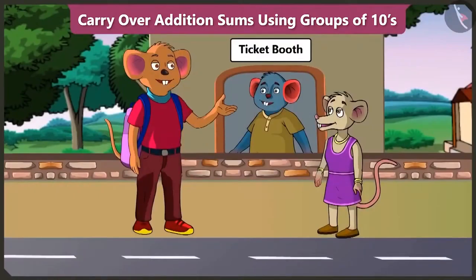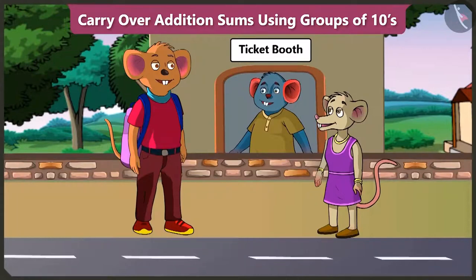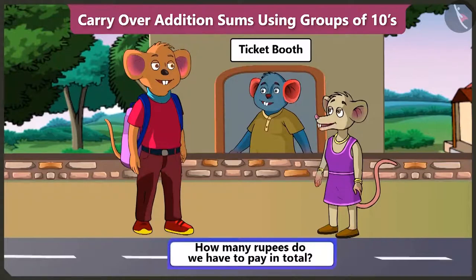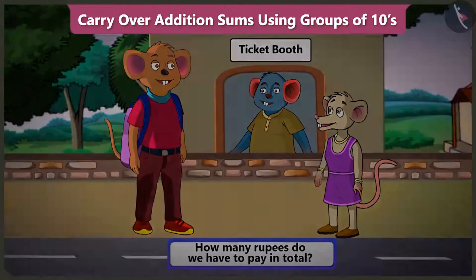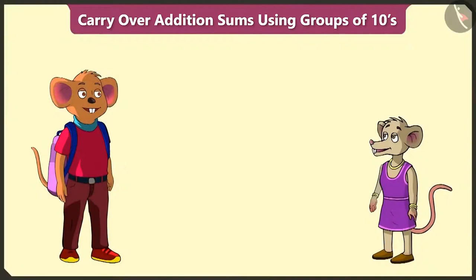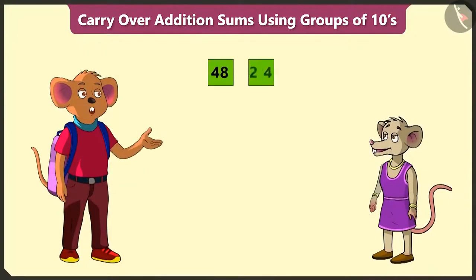Please give us two tickets to the zoo. You are older, so your ticket will be 48 rupees. And for this child, the ticket will be 24 rupees. So, Choo Choo, how many rupees do we have to pay in total? For this, we have to add 24 to 48.